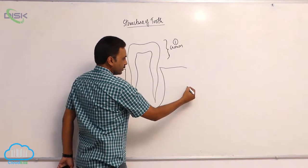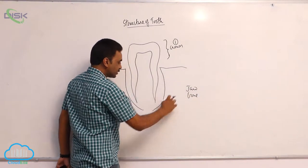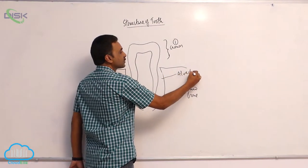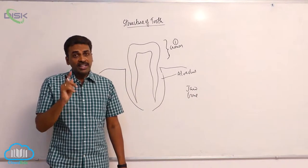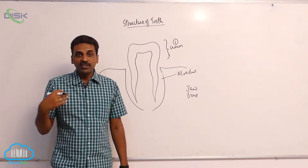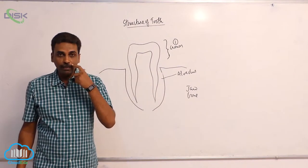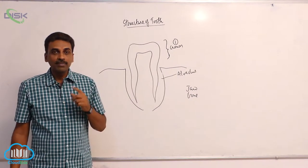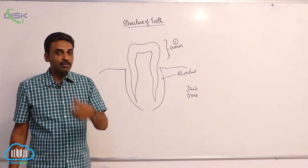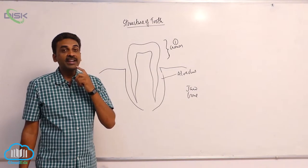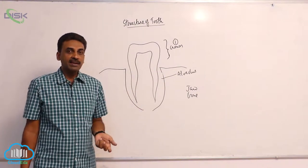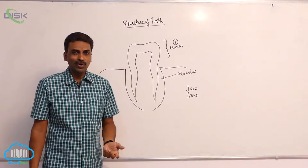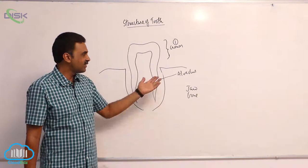This is the jawbone. The jawbone has a cavity inside called the alveolus. Teeth are present in two bones — one is the maxilla and the other is the mandible. In both the maxilla and mandibles, there are cavities called alveoli. Teeth are present inside these sockets, which is why we call it thecodont dentition.